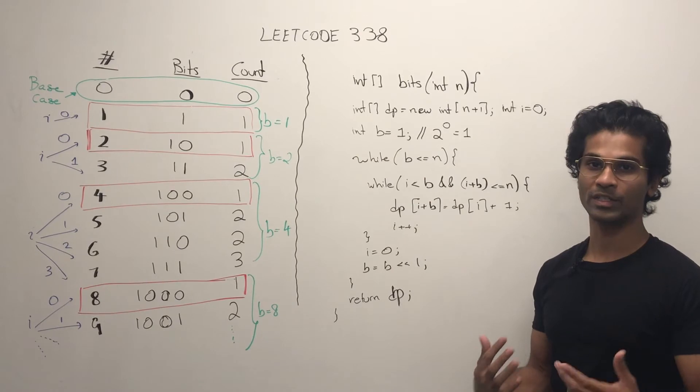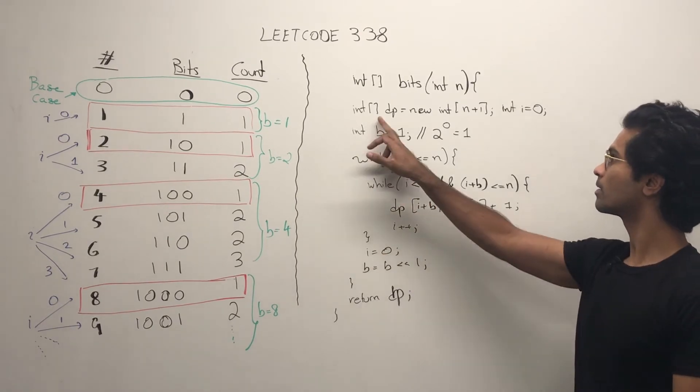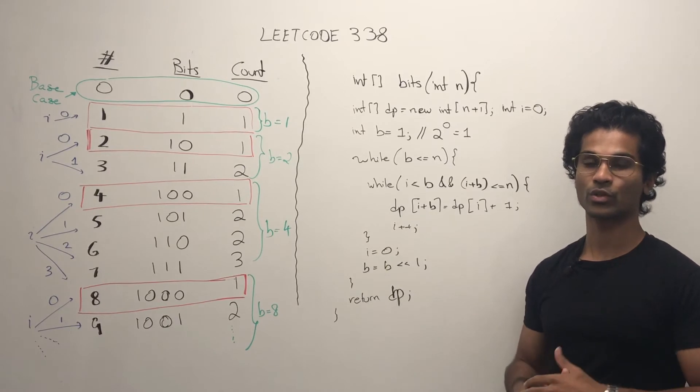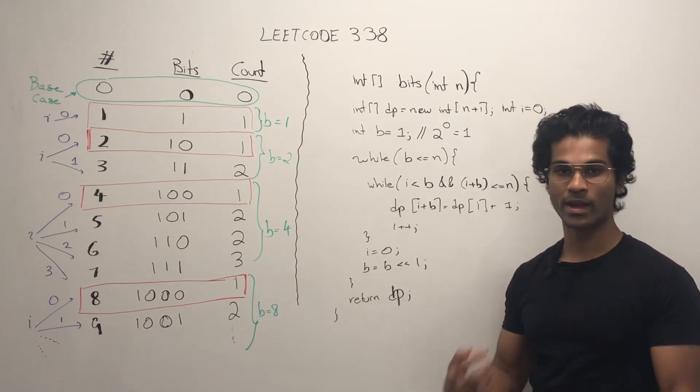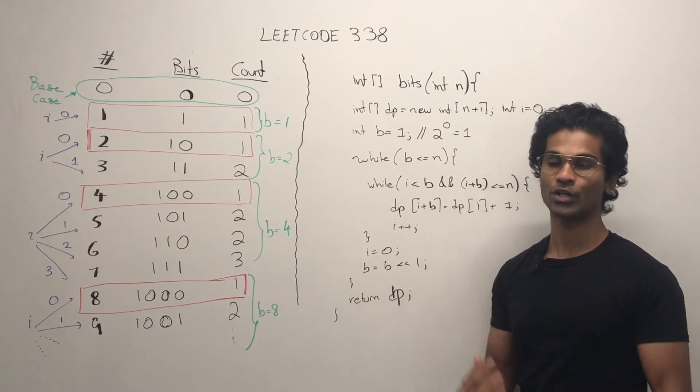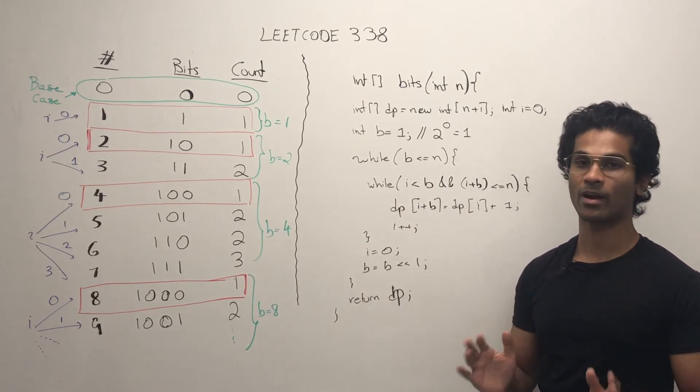We initialized our DP array as well and our while loop is going to run until N because that's all we care about. This B is never going to be larger than N. We don't care about numbers after that.